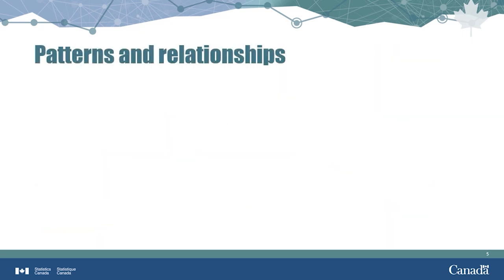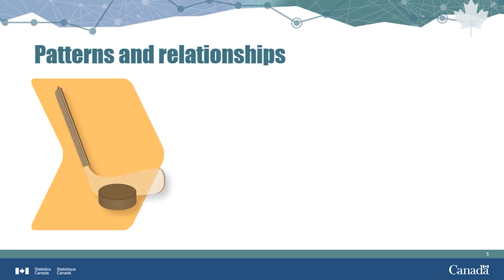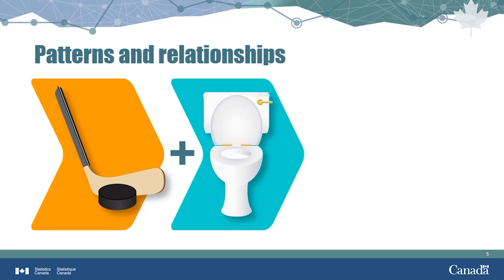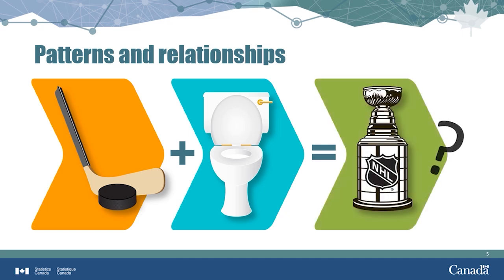Have you ever noticed the way the human mind really likes patterns? The mind will often create patterns when two variables appear to be so closely associated it can seem that one is dependent on the other. For example, Ottawa Senators hockey player Bruce Garnier was so superstitious he was convinced the only way he could break a slump was to dunk his hockey stick in a toilet bowl. Superstitions like this are a great example of how the brain likes to perceive relationships between two things, even when in reality no such relationships exist. In this video, you will learn how to prove the existence of a relationship, or lack thereof, between two variables.